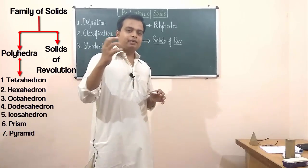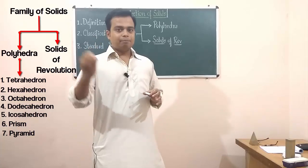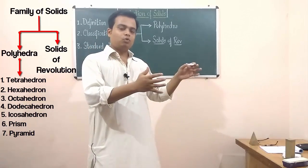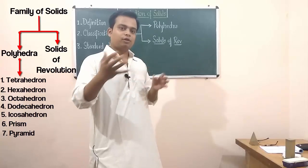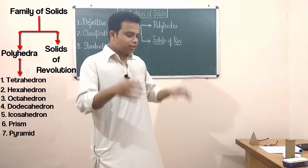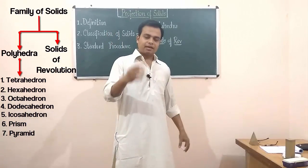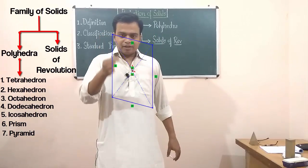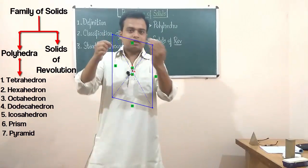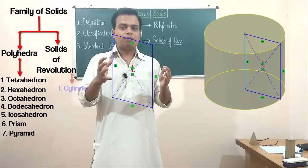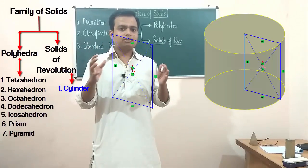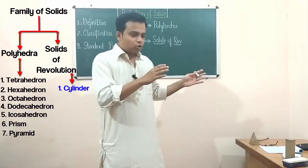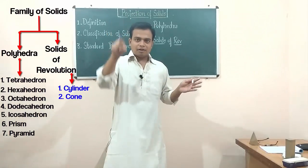Now let's focus on solids of revolution. A solid which is generated by rotating a plane figure about a certain axis can be referred to as a solid of revolution. For example, if you take a rectangle, keep one side fixed, and rotate the rest, it forms a cylinder — that's exactly how a cylinder is born.